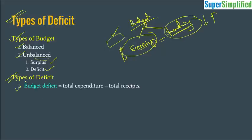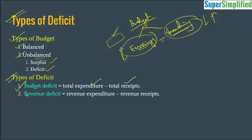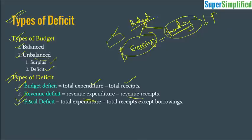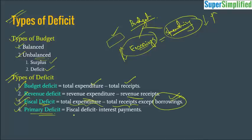There are different types of deficits. Budget deficit is total expenditure minus total receipts. Revenue deficit is revenue expenditure minus revenue receipts. Fiscal deficit is total expenditure minus total receipts except borrowings — so borrowings are not included here. Primary deficit is fiscal deficit minus interest payments.